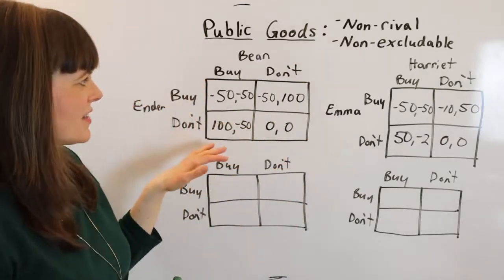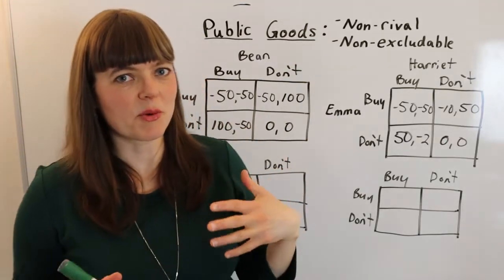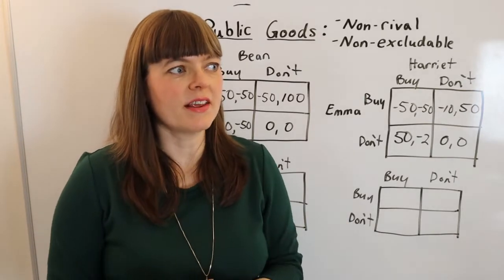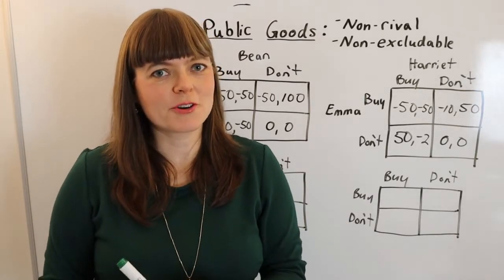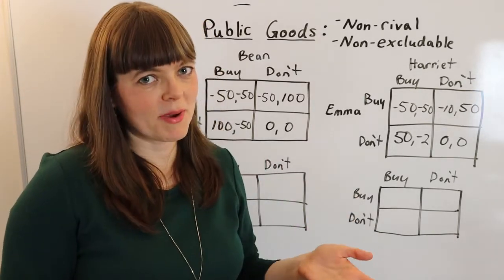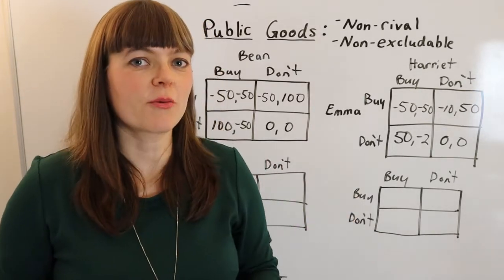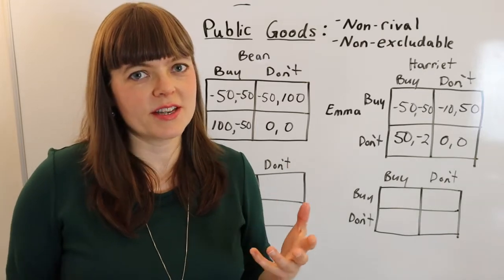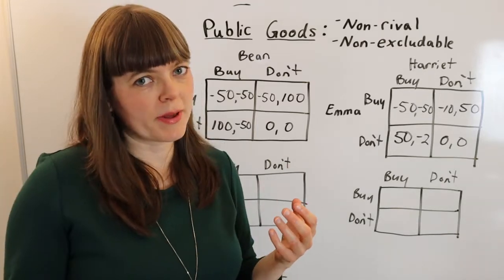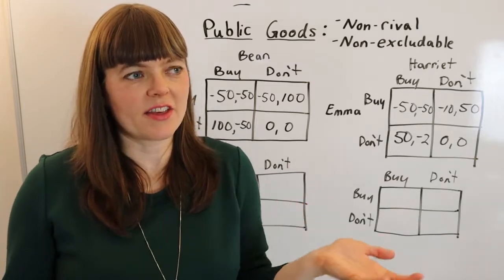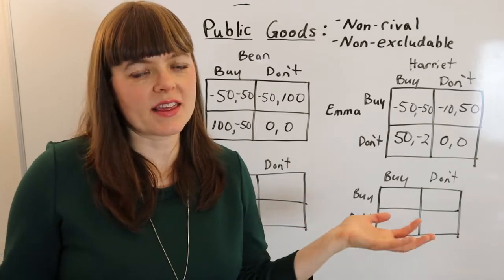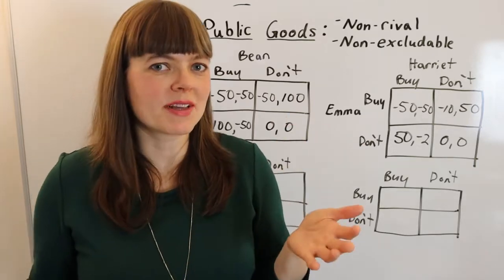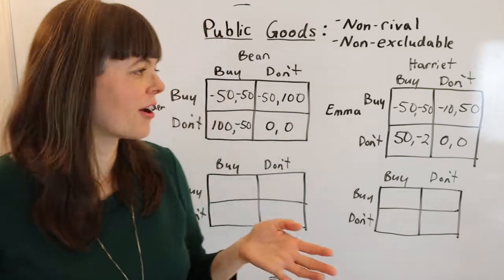The chapter has an example where roommates are buying a TV. You can have a situation where one roommate is a free rider — they both want a TV, one roommate buys it, and the other doesn't pay anything but gets to enjoy the TV. In that case, that roommate is a free rider.